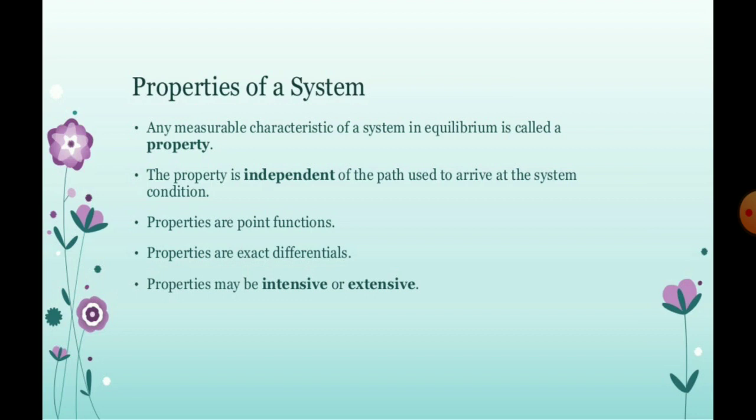If there is a system, there will be the most of properties for the system. Any measurable characteristics of the system in the equilibrium is called property. The property is independent of the path used to arrive at the system. The properties are point functions and properties of exact differentials. The properties may be intensive and extensive.